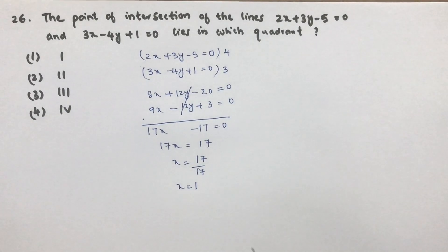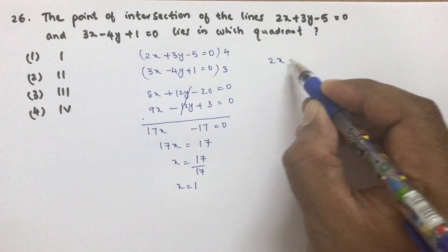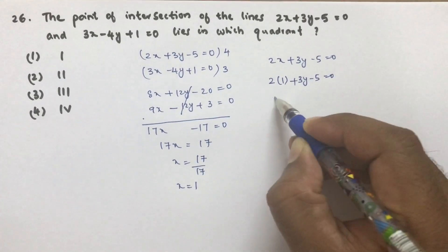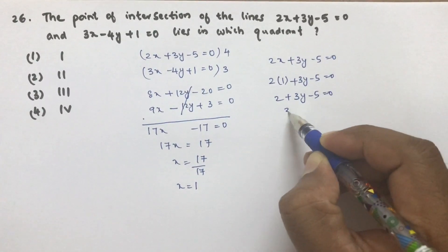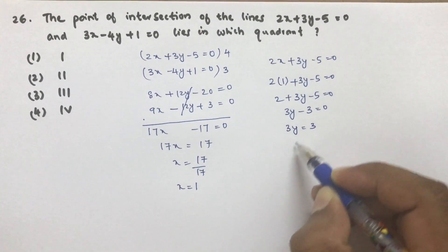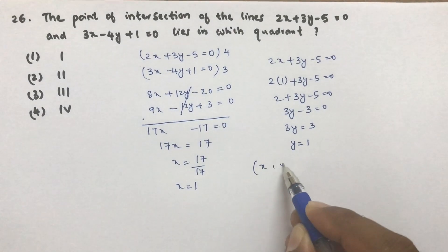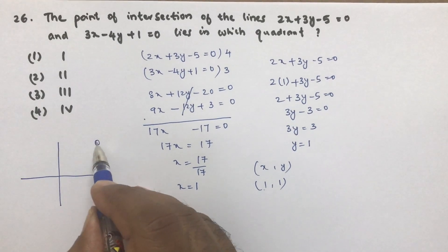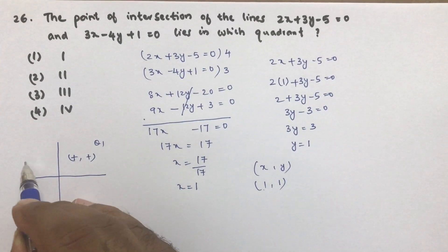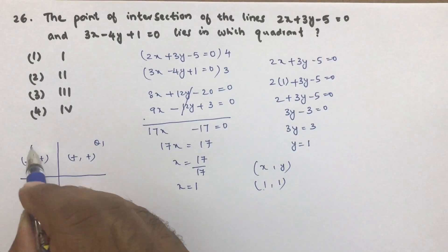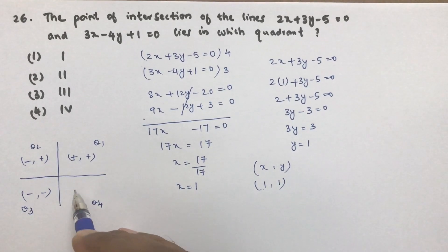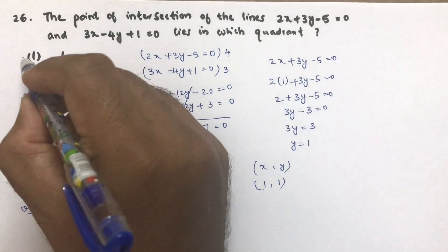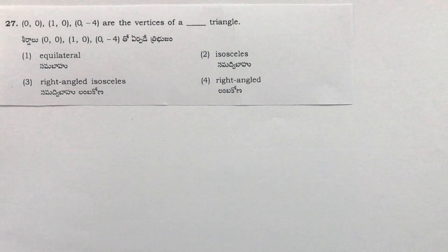Substitute x=1 into the first equation: 2(1)+3y−5=0, so 2+3y−5=0, giving 3y=3, hence y=1. The intersection point is (1, 1). Both values are positive, and in the first quadrant both coordinates are positive, so the point lies in the first quadrant. The correct option is 1.